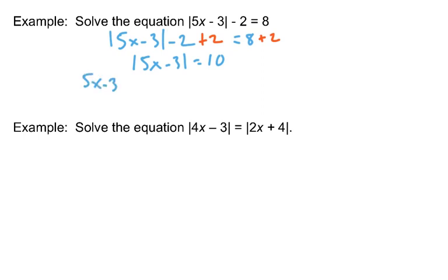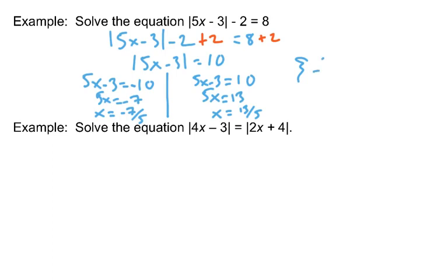So 5x minus 3 is either negative 10, 10 to the left, or 5x minus 3 equals positive 10, 10 to the right. Each one of those is simply a linear equation and you just solve them as usual. Add 3 to both sides of both of them. If you do that to the one on the left, you get 5x equals negative 7. Divide both sides by 5 gives you x equals negative 7 fifths. The other one, add 3 to both sides, gives you 5x equals 13. Divide both sides by 5, x equals 13 fifths. My solution set contains negative 7 fifths and 13 fifths.